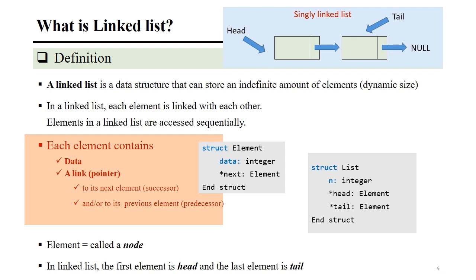When we create a linked list, we need to create certain data structures. The first one is the element, which consists of data and a pointer. Next, we also store a list structure variable, which consists of n — representing the number of elements in the list. When we add an element to the list, we need to increment this variable. We also have a reference to the head and tail of the list. These two data structures should be created so that we can store information as a linked list in a compact way.